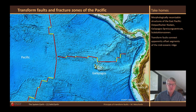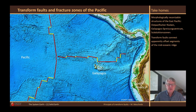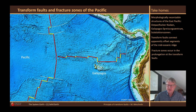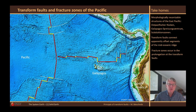The transform faults connect the offset ridge segments and therefore contribute to the fact that, despite the offsets, it is a continuous plate boundary, just offset from time to time along the transform faults. You can also see the structural elements that are a quasi-continuation of the transform faults — these dashed lines are the fracture zones, which are in direct continuation of the transform faults but where no strike-slip movement occurs; only vertical compensatory movements occur there. One of the most commonly seen errors is that these fracture zones are referred to as the transform faults, but they are not.